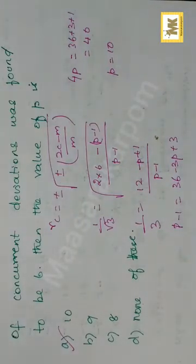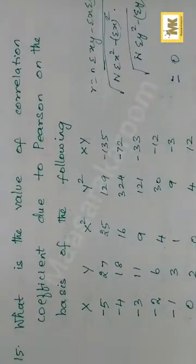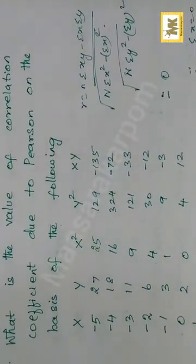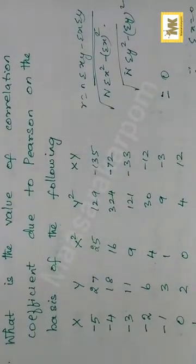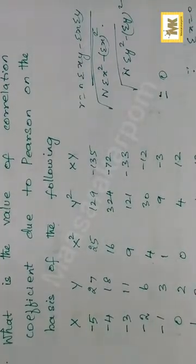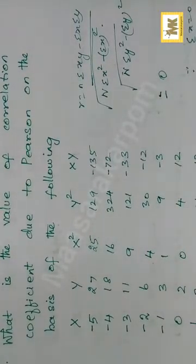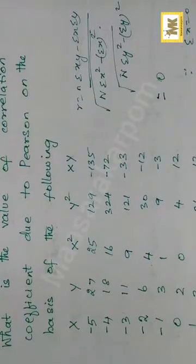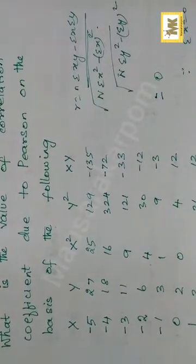The answer is p is equal to 10. Question number 15: value of correlation coefficient due to Pearson. r is equal to n times sigma xy minus sigma x times sigma y, divided by the square root of [n sigma x squared minus (sigma x) squared] times [n sigma y squared minus (sigma y) squared].